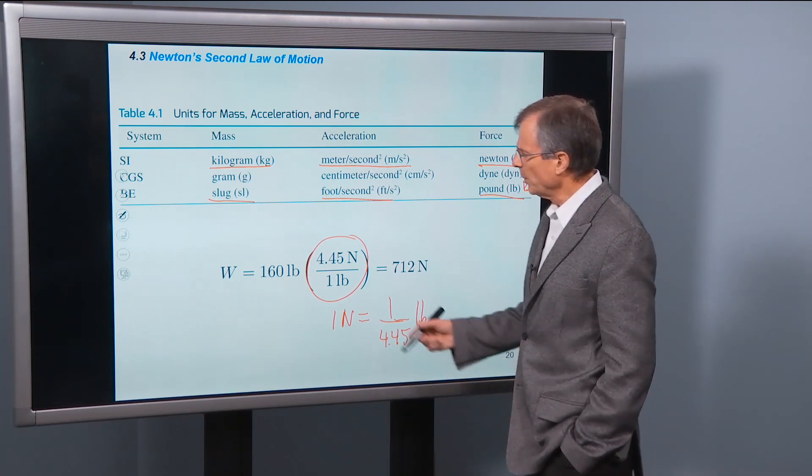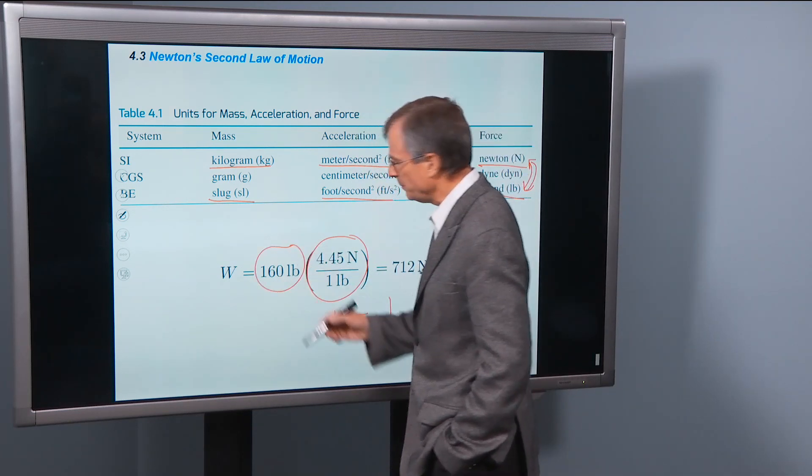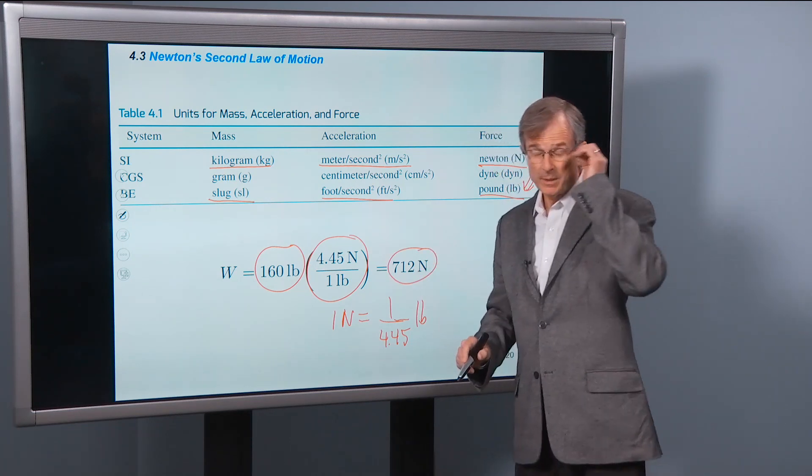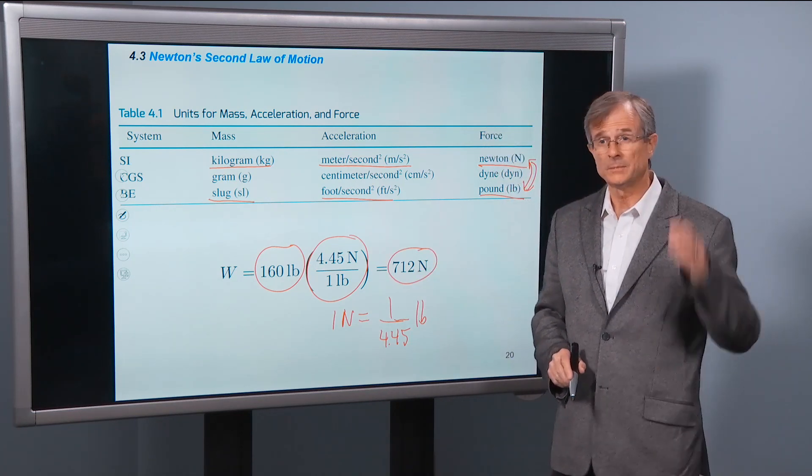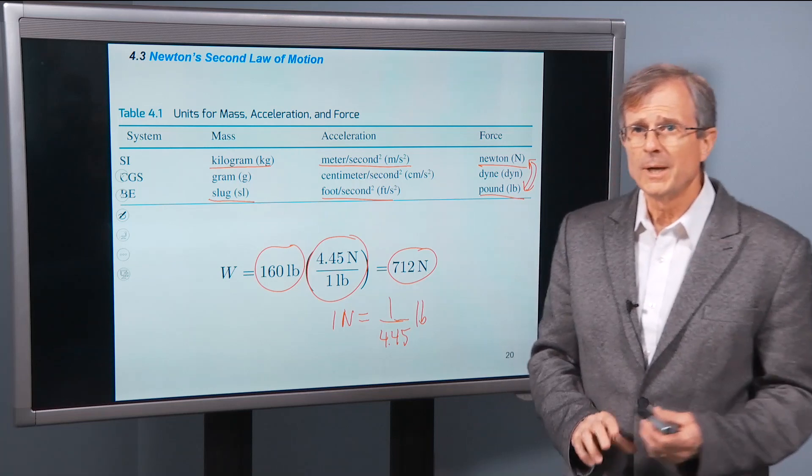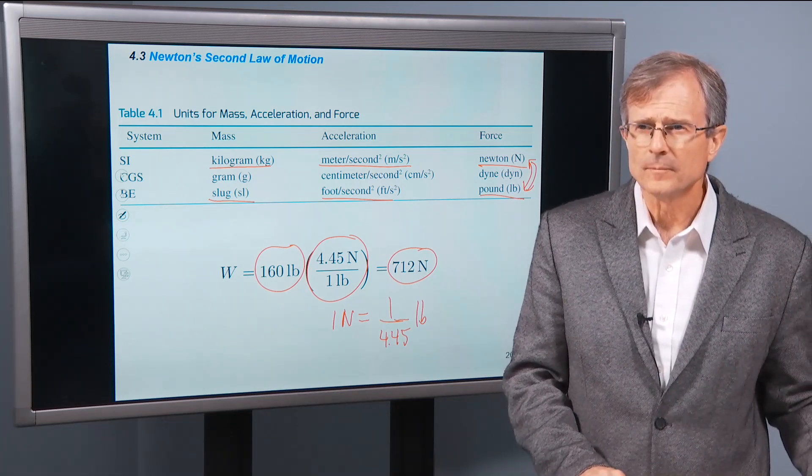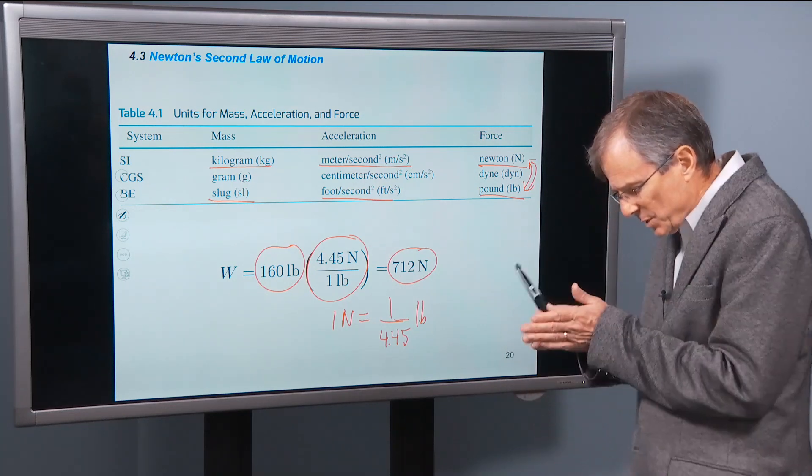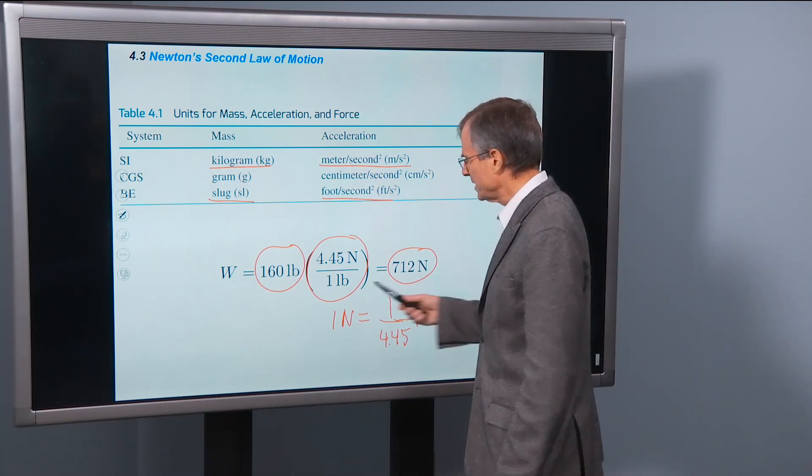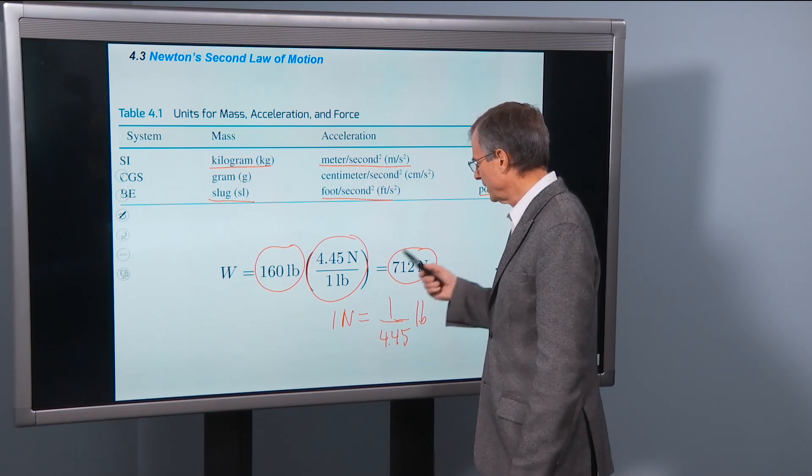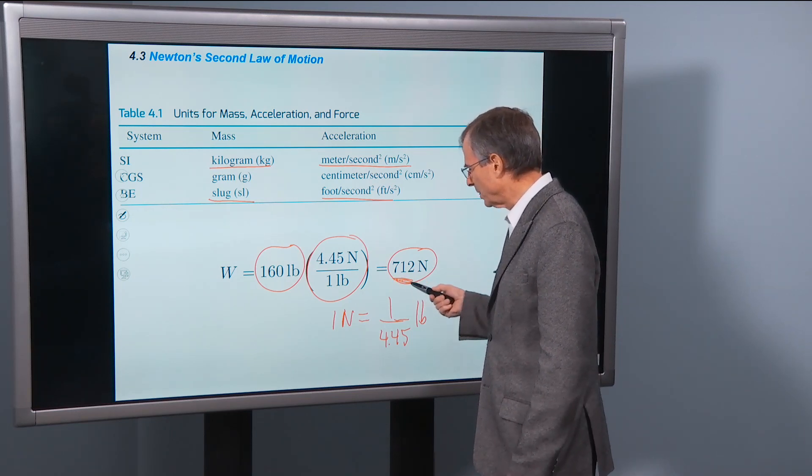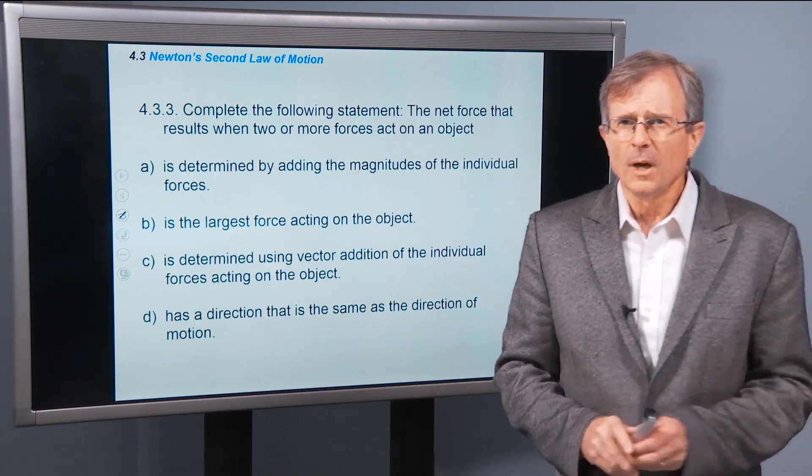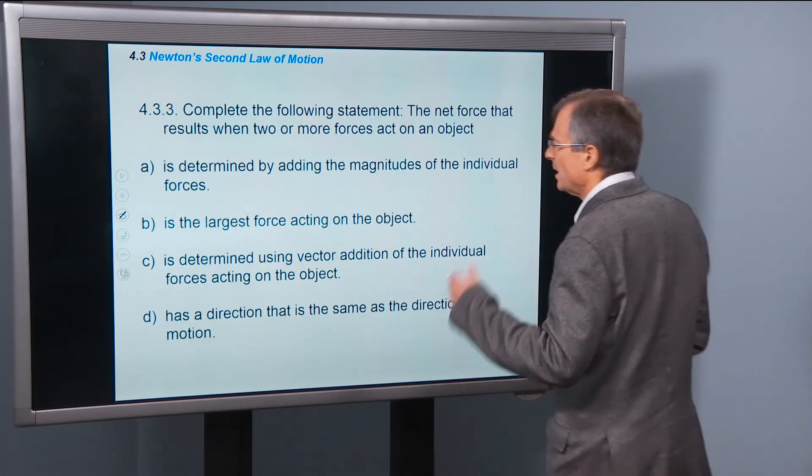And if you want to convert my weight, which is 160 pounds, in the British engineering system, into newtons, looks like I'm about a 700 newton guy. So just remembering that a newton numbers are, a newton is a smaller unit, so to measure the same amount of force, you have to have a bigger number of newtons than you do for pounds. All right, let's see how well we understand this concept.